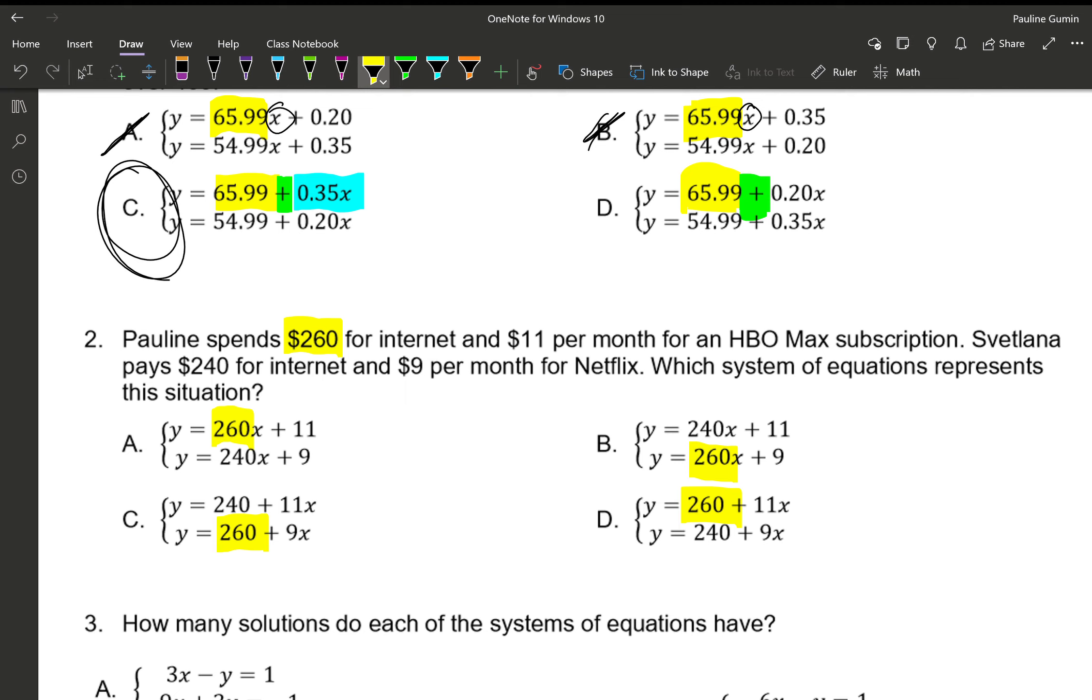Now, $260 is a one-time thing. I don't have a per month thing here. So Pauline spends $260 once. There should be no variables next to it, which means I can cross off letter A and letter B again because they both have little X's. Next, we have and, which is a plus. Unfortunately, they both have a plus. Then I have for Pauline $11 per month. So I should have 11X. There we go. That's letter D.